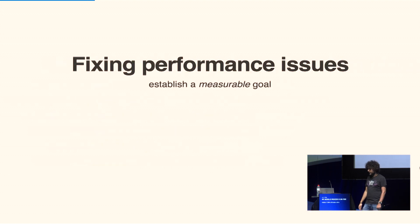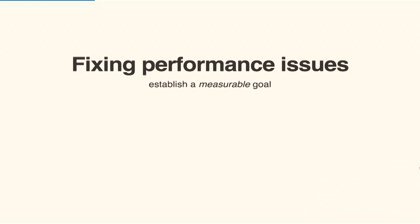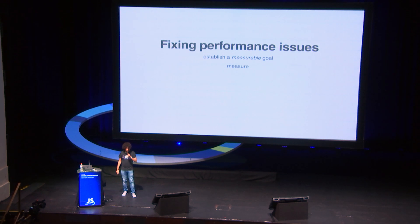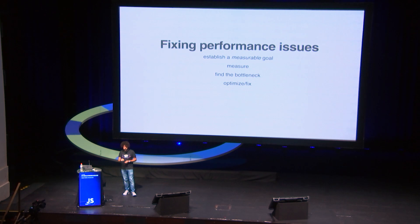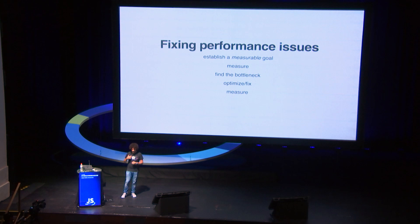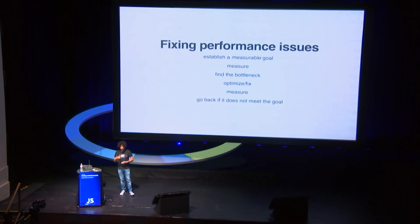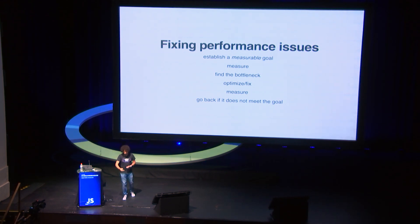So how do we fix things? The most important bit is establishing a measurable goal — I will get back to this later. Then you measure to get good measurements, find what we call the bottleneck, which is what is slowing down your application, and then fix that bottleneck. Removing one bottleneck will ideally reveal another one, and you measure again. If it's not fixed, you find a new bottleneck, optimize, measure all over again — up until your measurable goal is reached.